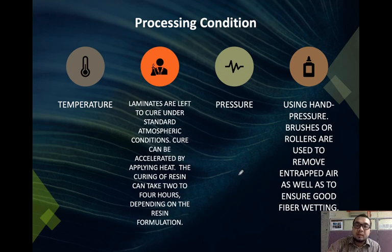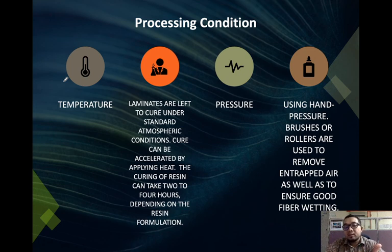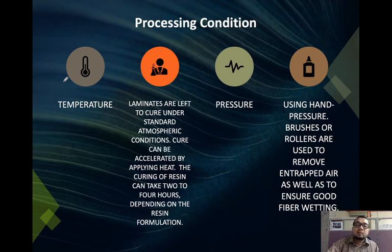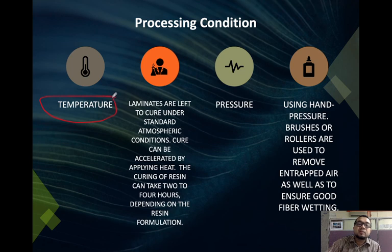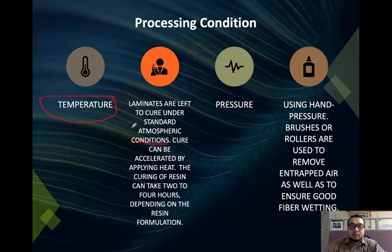Now, the processing conditions. First is temperature — for thermoset materials, temperature plays a main role. The surrounding temperature also matters because we cure at room temperature; if the room is air-conditioned, the temperature is lower, which may slow down the curing process. Laminates are left to cure under standard atmospheric conditions. Cure can be accelerated by applying heat — for thermoset (polyester), when heat is applied, curing is promoted.